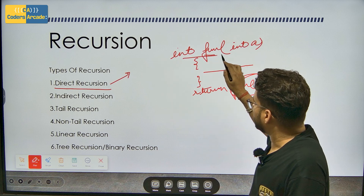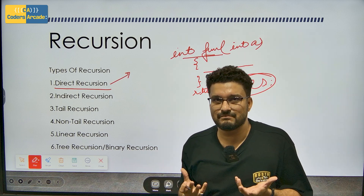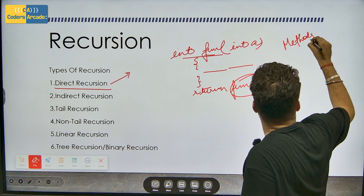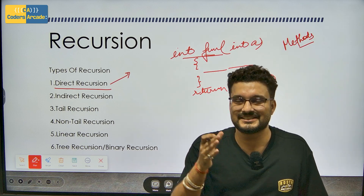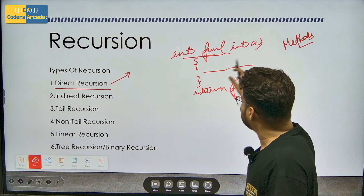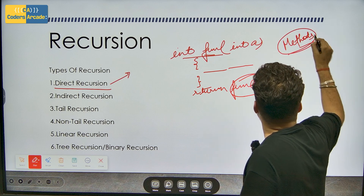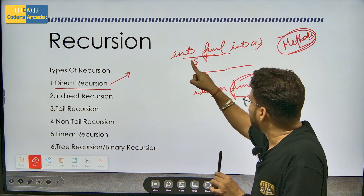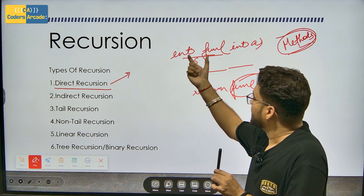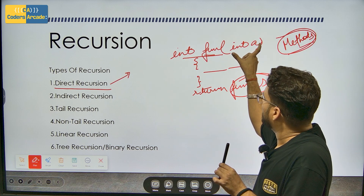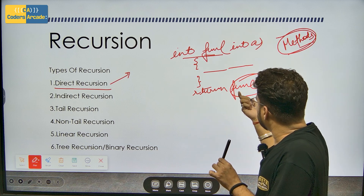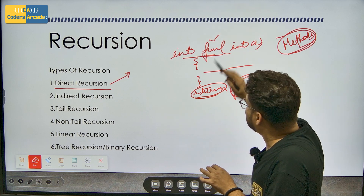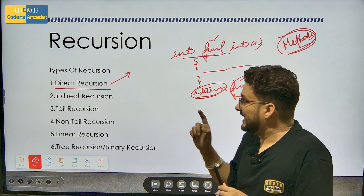Direct recursion is clear. In Java, functions are specifically called methods — always remember, if you say 'functions' in Java, it is a sin, always say 'methods'. So in direct recursion, we have a return type, a method name, a variable, and the return value is that same method itself — it is returning that method directly. That is known as direct recursion.